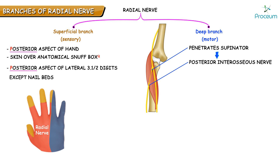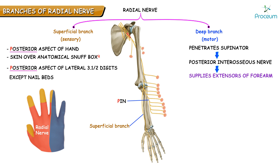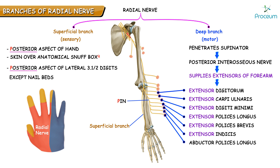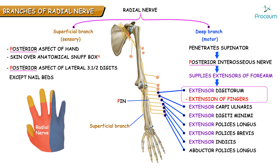The posterior interosseous nerve, which is purely motor, supplies the extensors on the back of the forearm: extensor digitorum, extensor carpi ulnaris, extensor digiti minimi, extensor pollicis longus, extensor pollicis brevis, extensor indicis, and abductor pollicis longus. Most extensor muscles on the posterior aspect of the forearm are supplied by the posterior interosseous nerve, which is a branch of the radial nerve. Remember that extensor digitorum, helping in extension of the fingers, is supplied by the posterior interosseous nerve.